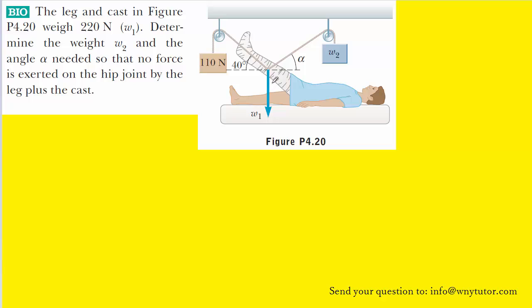When drawing any free body diagram, we first need to select the object that we will draw the diagram for. In this case, the best object to use is the leg because we can see that all three forces are acting on the leg.